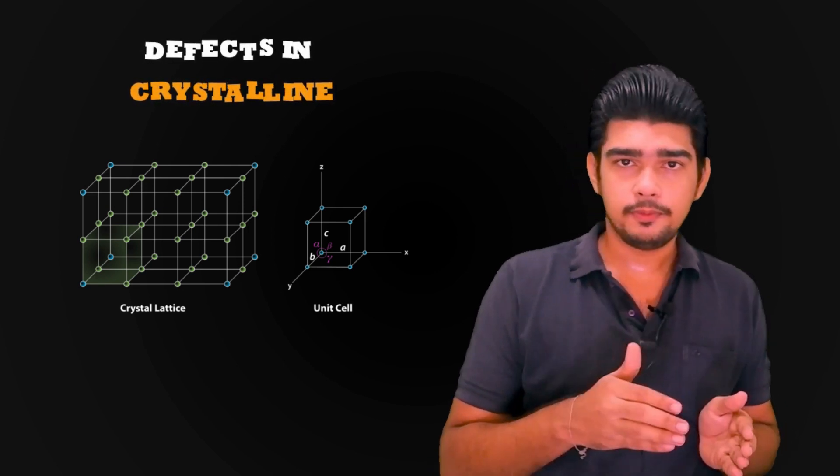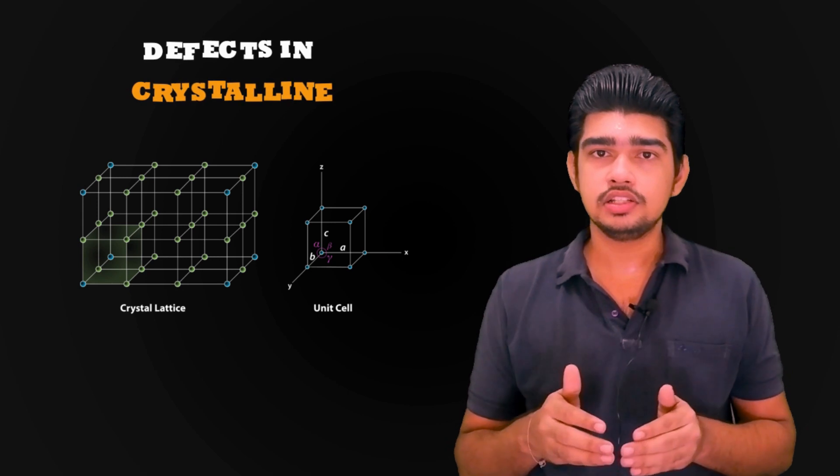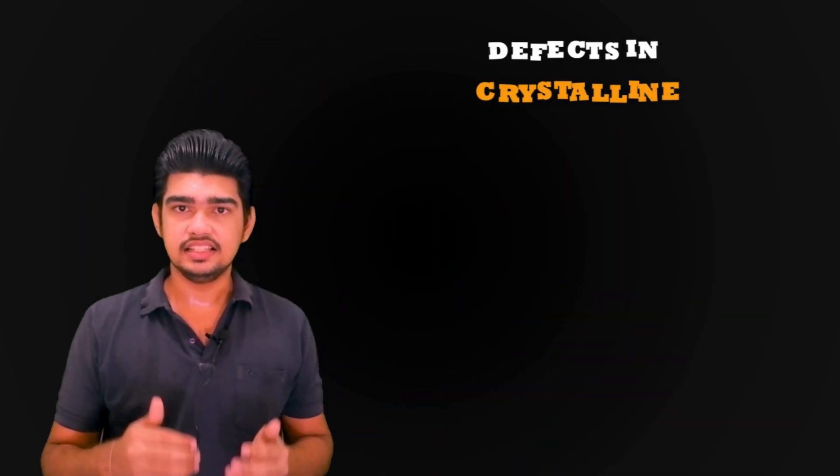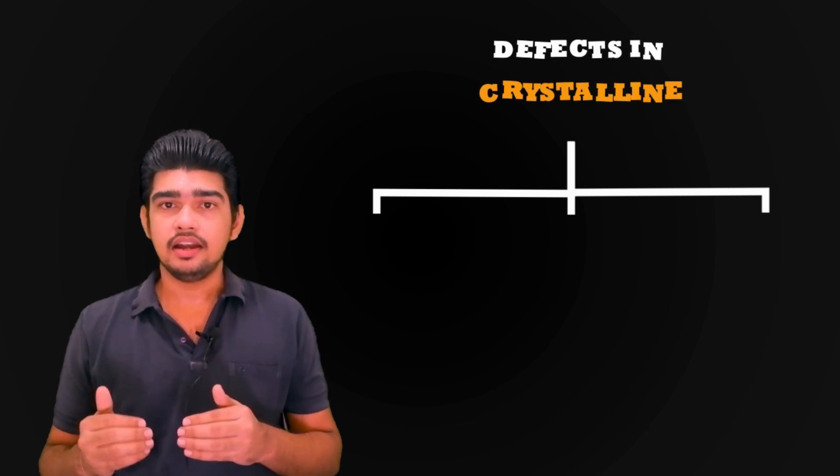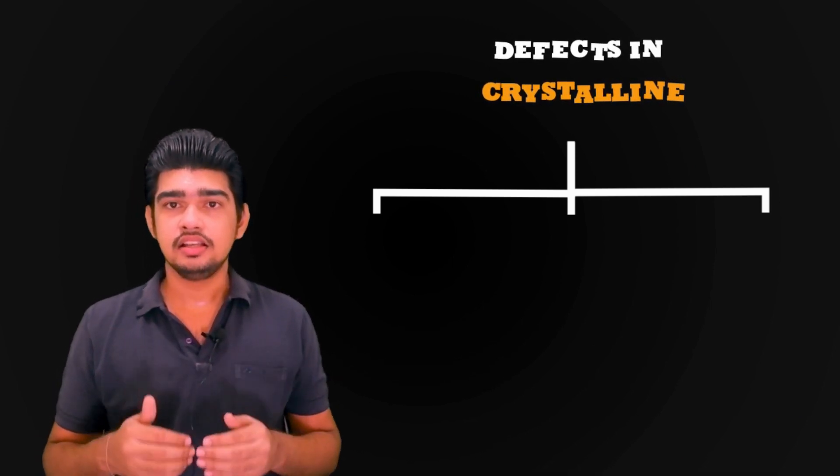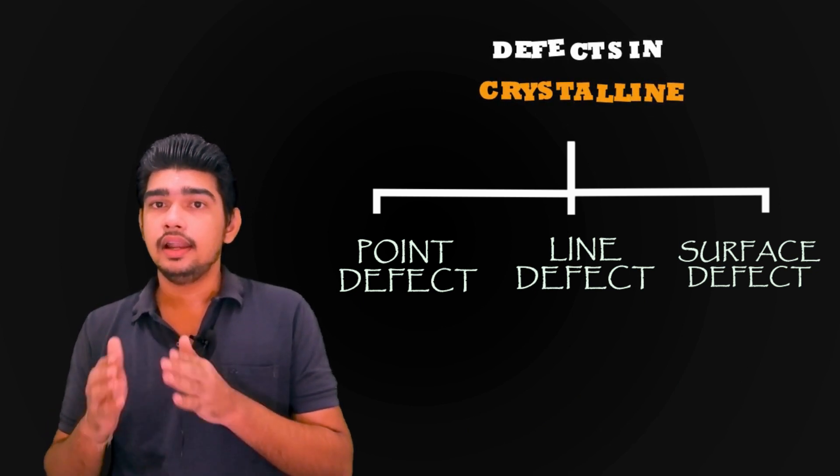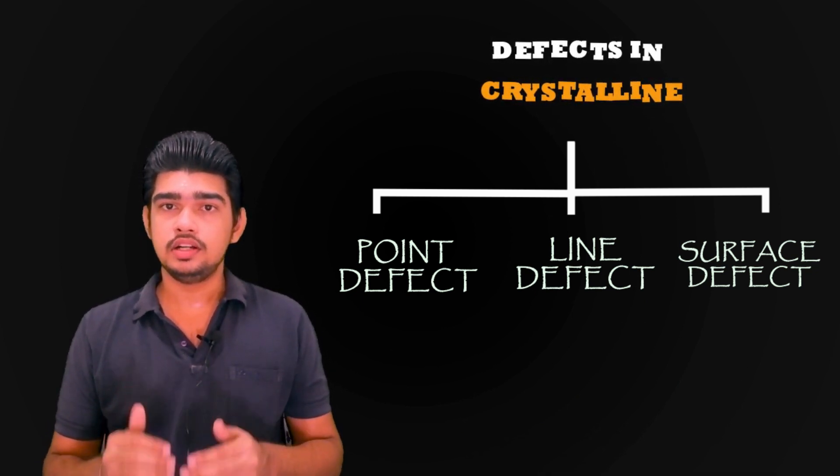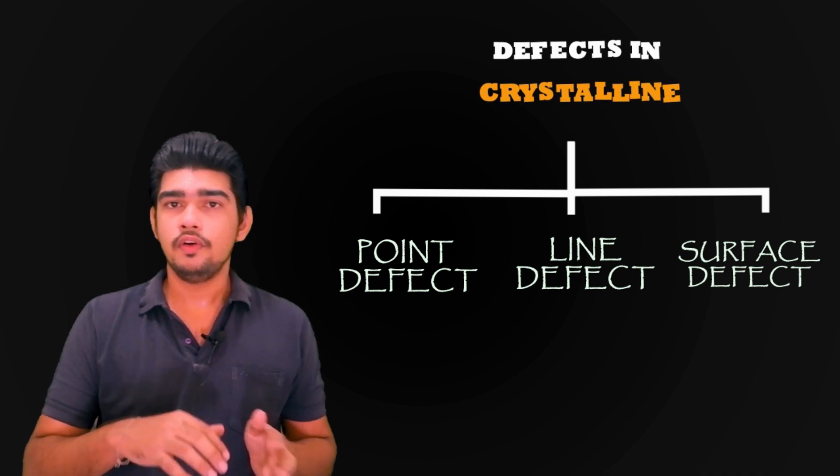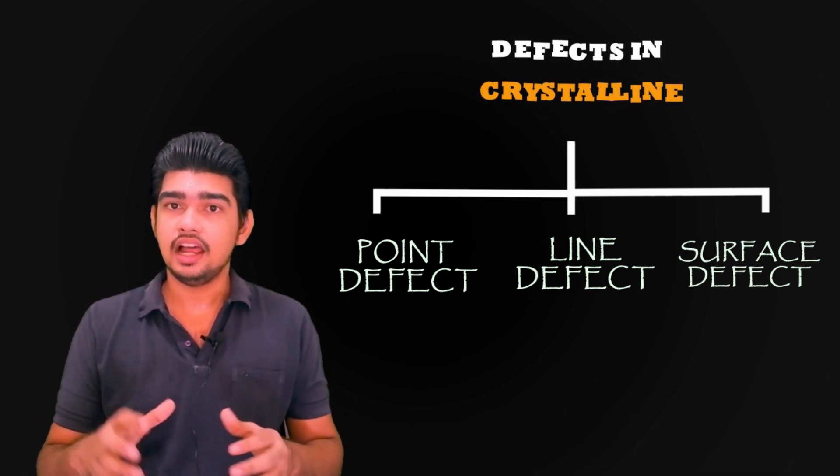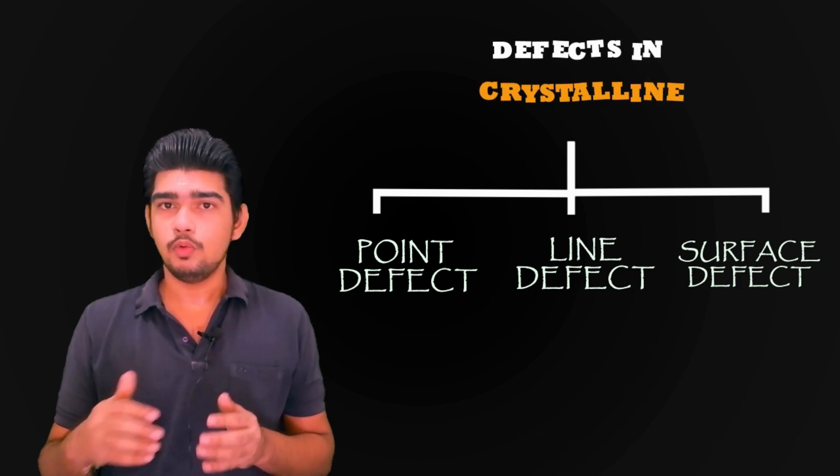Either term, imperfection or defect, refers to deviation in the regular pattern of crystalline lattice. The defects can be catalogued as point defects, line defects, and surface defects. We can categorize or classify them into point, line and surface defects. Let us see one by one.